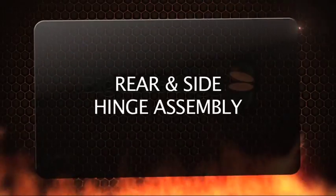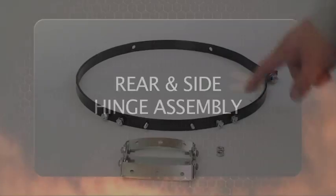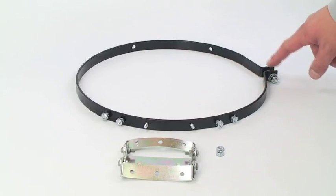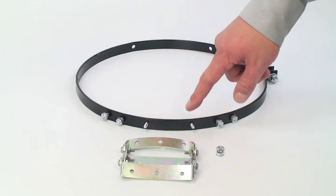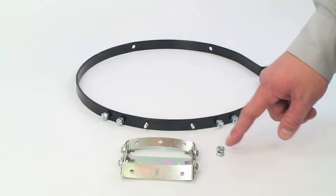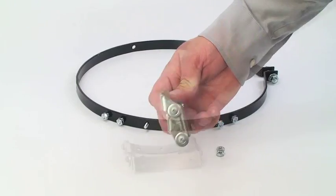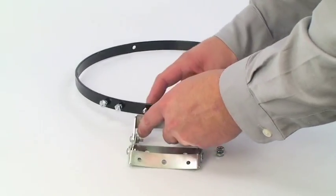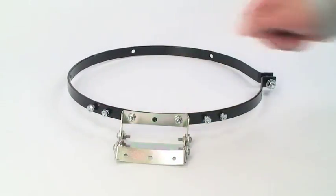You are now ready to install the rear and side hinge assembly. Place the lower band in front of you with the flange on the right and remove nuts from the studs in holes five and six. Now attach the lower bracket of the rear hinge, replace the nuts, and hand tighten.